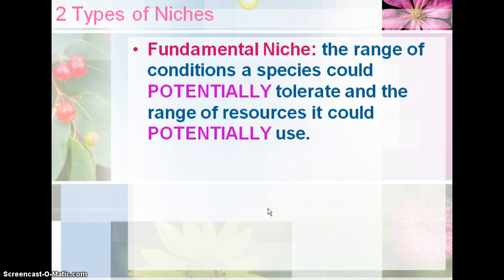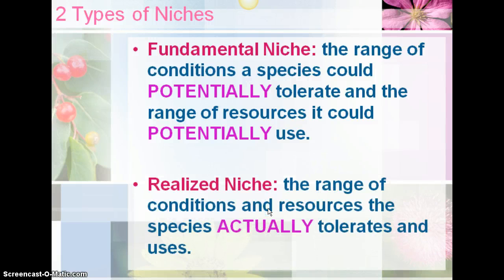We have two types of niches. The fundamental niche is the range of conditions a species could potentially tolerate and the range of resources it could potentially use — it's pretty broad, representing everything that's available. What actually happens is called the realized niche, and this is the range of conditions the species actually decides to use — it sits inside the fundamental niche. The fundamental niche is everything that's possible, and the realized niche is the smaller range they actually choose to use. The fundamental niche is larger because it looks at all the potential.